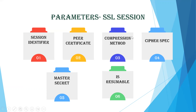The third parameter is compression method — an algorithm used for compressing the data. Before encryption takes place, the data is first compressed and then encryption occurs. The fourth is cipher spec, which is bulk data encryption. Algorithms like hash algorithm MD5 — message digest algorithm — will be used for bulk data encryption and for MAC calculation, in a mode of cryptographic form.